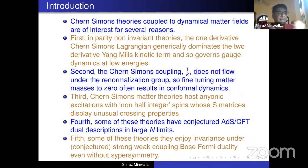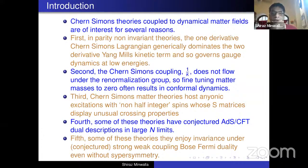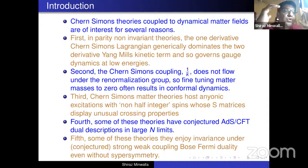Third, Chern-Simons theories, especially when you add matter to them, exhibit phenomena that you don't normally see in ordinary quantum field theories. For instance, you see particles with non-half-integer spins, and with that, particles that obey anyonic statistics, and the S-matrices of these particles turn out to display non-standard crossing relations under crossing symmetry. For the matter, Chern-Simons theories sometimes have interesting large N bulk dual descriptions via the AdS-CFT correspondence. For instance, ABJM theory is one such example, Vasiliev theories are others. Fifth, matter Chern-Simons theories turn out to enjoy an invariance under a sort of Bose-Fermi duality.